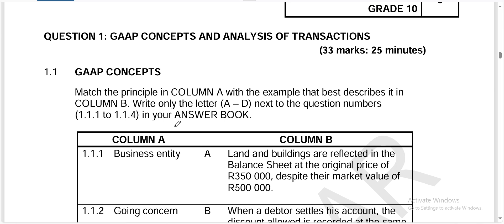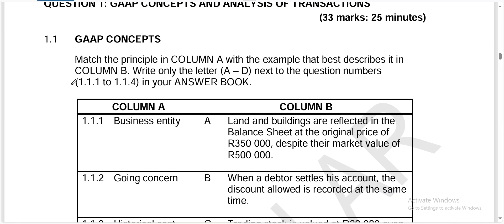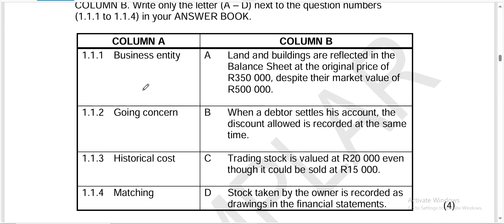We're only going to do question one. In accounting, paper one should always include a minimum of two questions with basic concepts. It's a standard that a paper should include basic concepts. The instruction says to match a principle in column A with the example best described in column B. Write only the letters A to D next to question numbers 1.1.1 to 1.1.4 in your answer book. You must always start with the easiest ones.